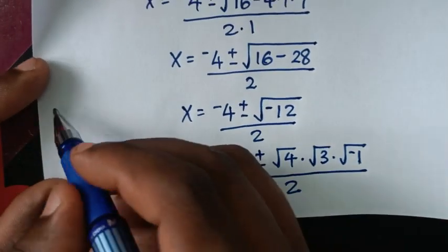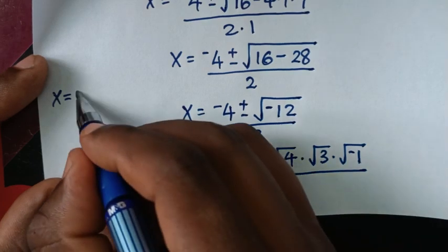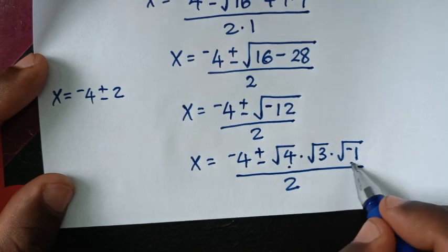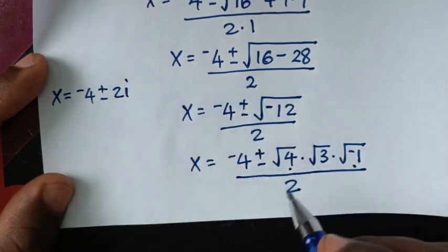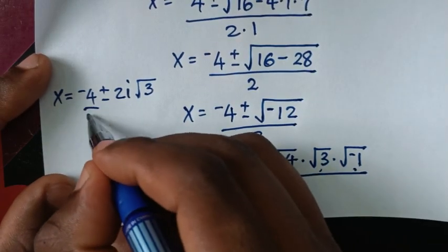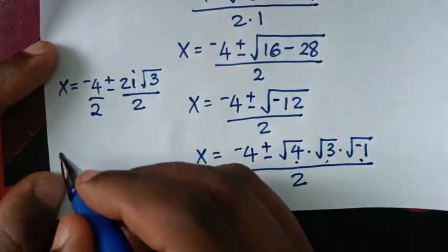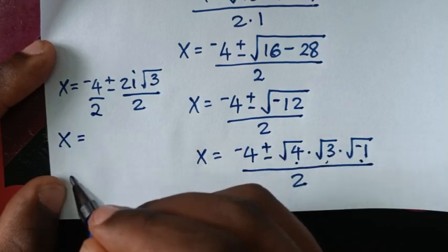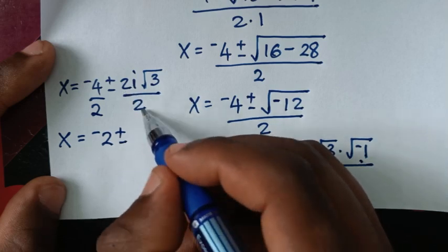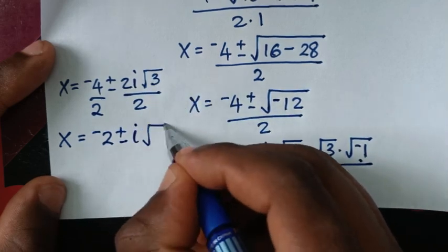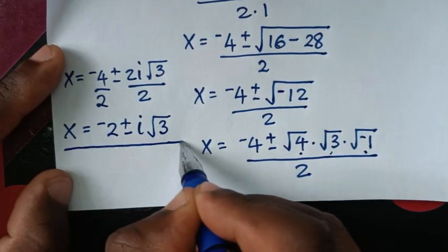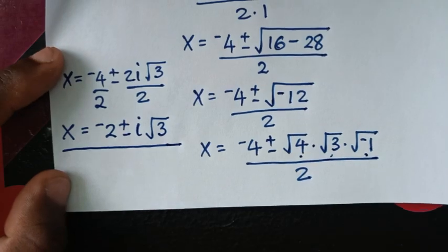So x = (−4 ± 2i√3) / 2, giving two complex solutions because of the imaginary number.